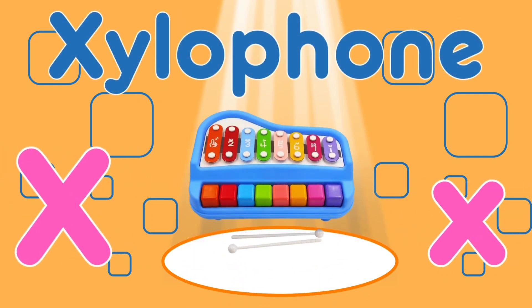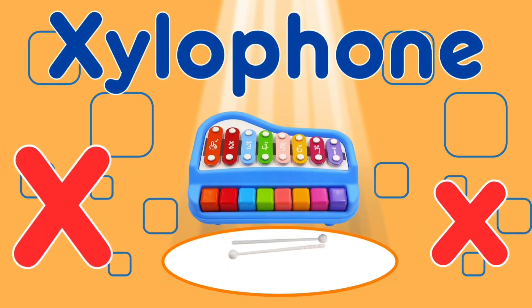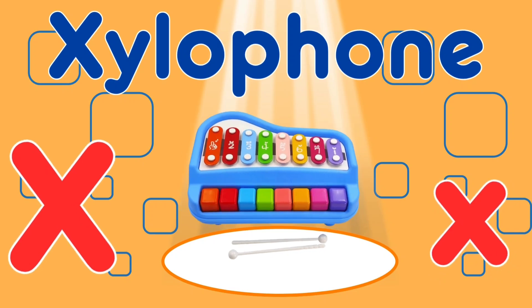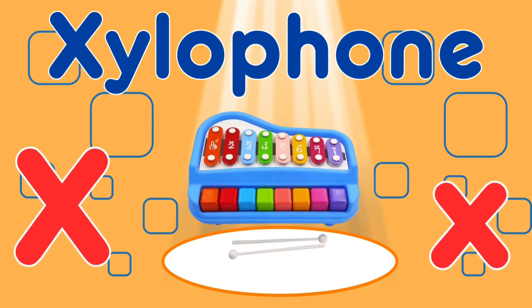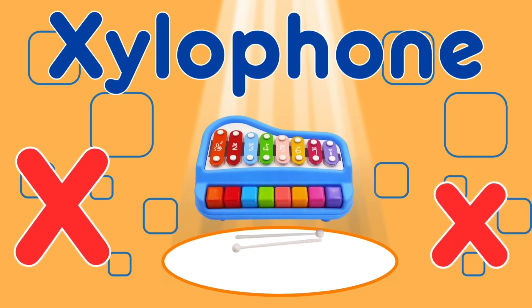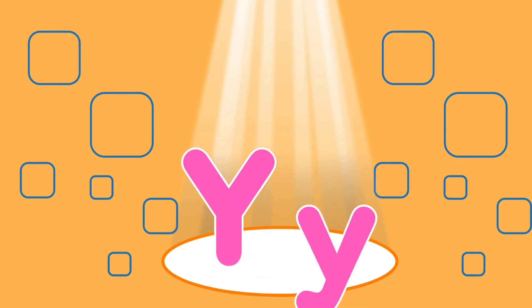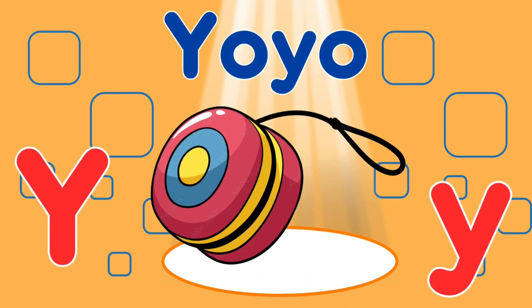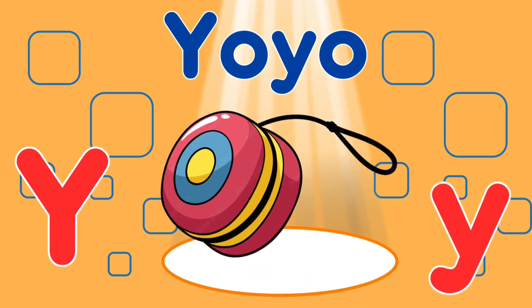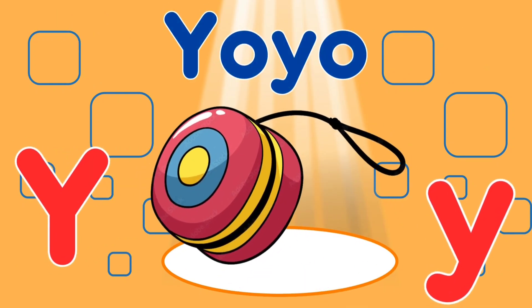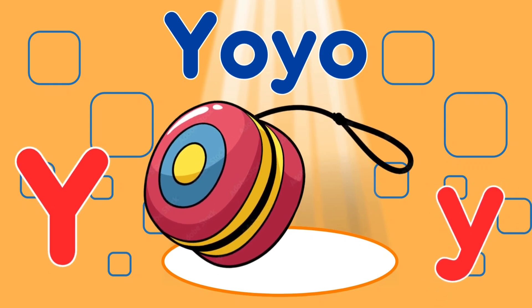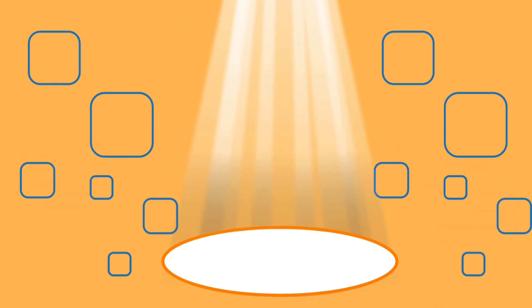X is for xylophone. X, xylophone, X, xylophone. Y is for yo-yo. Y, yo-yo, Y, yo-yo, Y, yo-yo, Y, yo-yo.